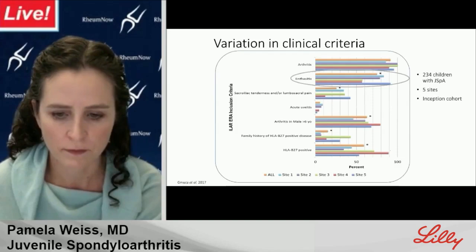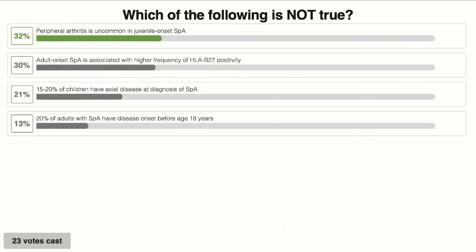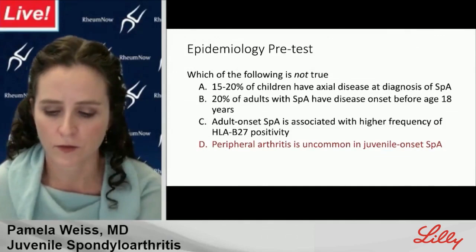Moving to the epidemiology pretest: the one statement that was not true is that peripheral arthritis is uncommon in juvenile onset spinal arthritis.